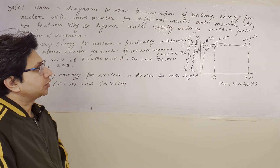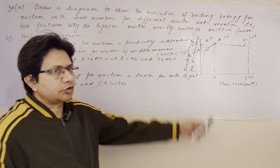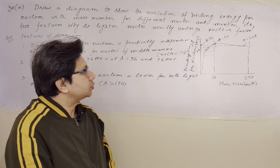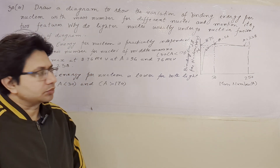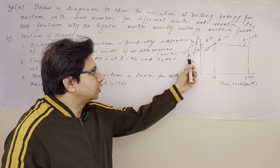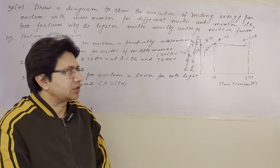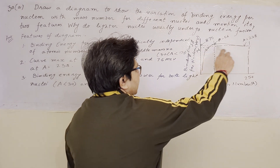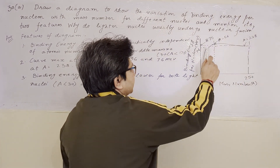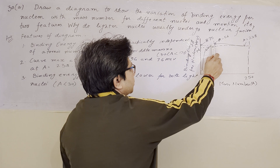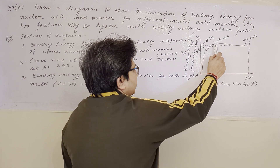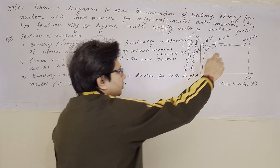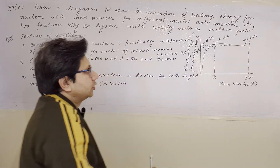This problem is based on the topic of the graph between the binding energy per nucleon and mass number. We have to draw the diagram — the graph between binding energy per nucleon versus mass number. The graph goes upward as the mass number increases, reaches a highest value, then saturates and goes a bit down.